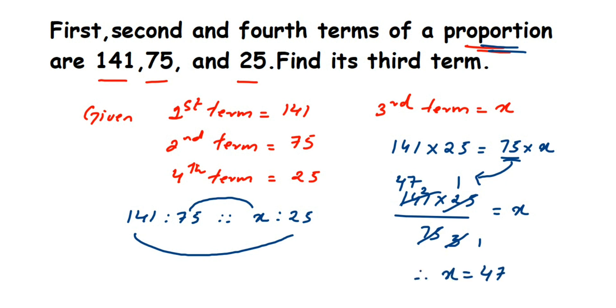If they ask you this type of question where terms are in proportion, you solve it this way. They may ask you to find the second term, third term, or fourth term, but the framing is the same: assume a variable for whichever term you need to find and then solve it.